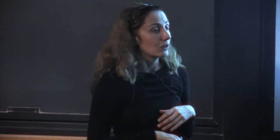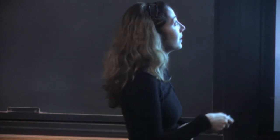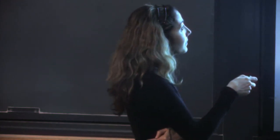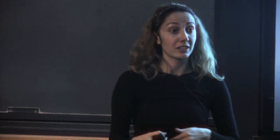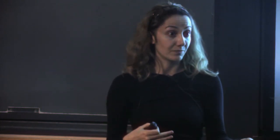Another type of signal is called a high frequency of derived allele. When you have a polymorphism, you have two different alleles: the ancestral allele, which was present before mutation occurred, and the derived allele, which the mutation generated. The way we figure out which is ancestral and which is derived is by looking at close relatives — other species. We look at chimpanzees and gorillas to determine what the ancestral allele was, and what looks like the new derived allele.